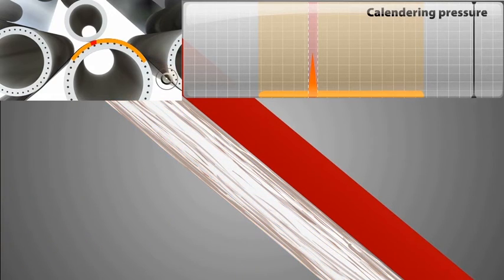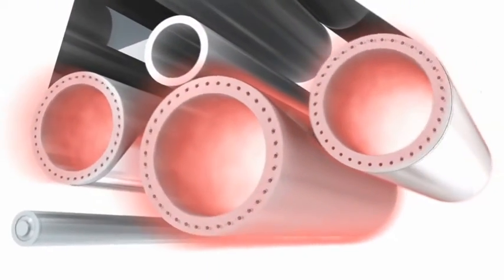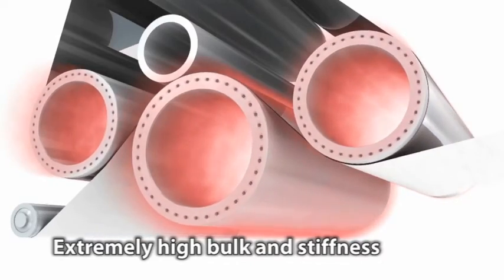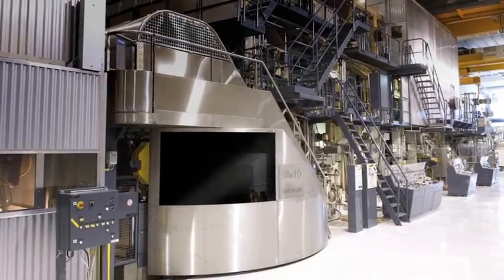These calendaring zones allow significantly higher heat transfer and plasticization, resulting in extremely high bulk and stiffness, as much as 10% higher potential than with a Yankee cylinder. Consequently, this generates substantial raw material savings and increases yield.